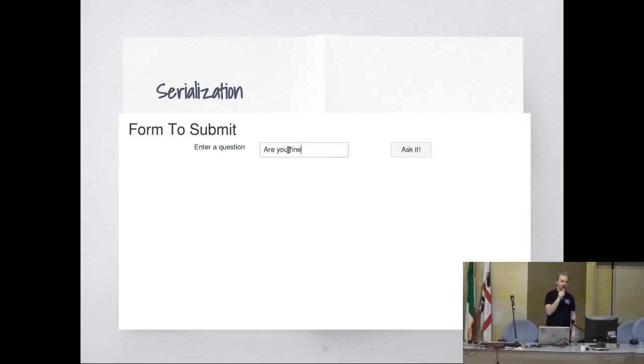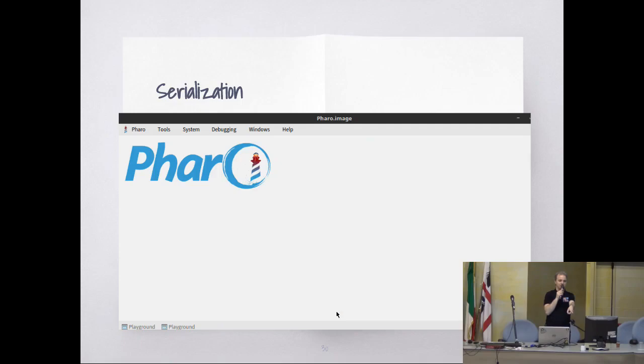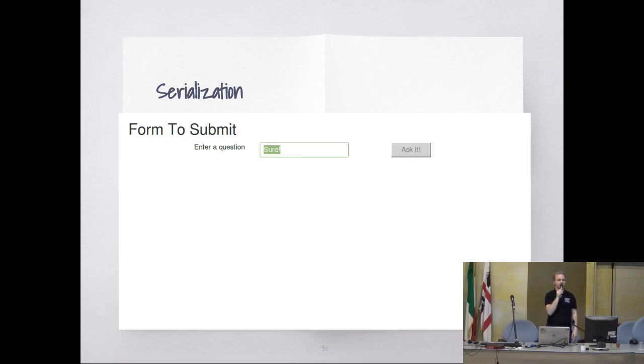So I enter something, when I click it the button gets disabled, goes to the server, asks me something, I respond, and when it comes back it replaces the content.